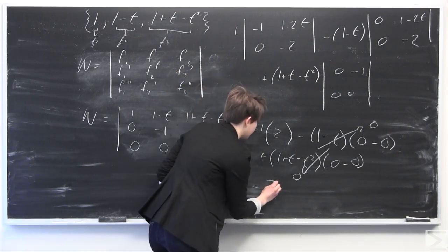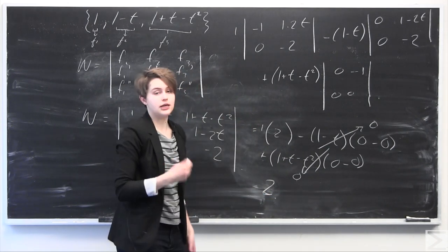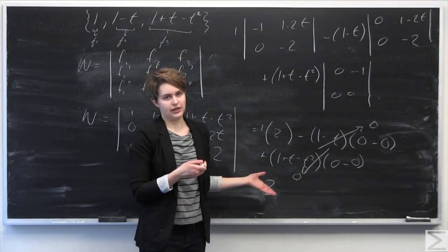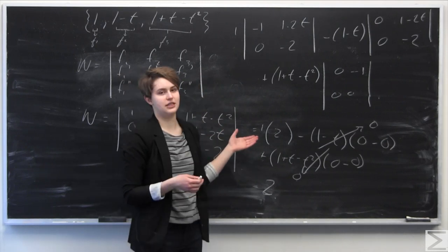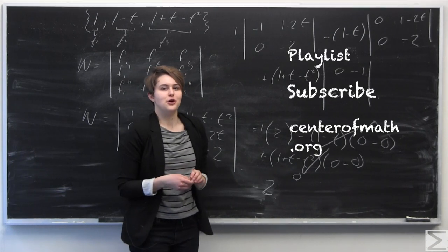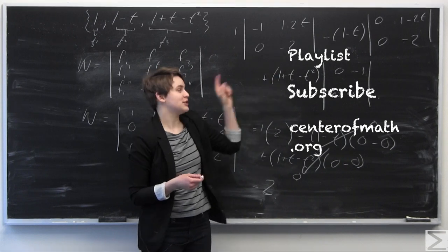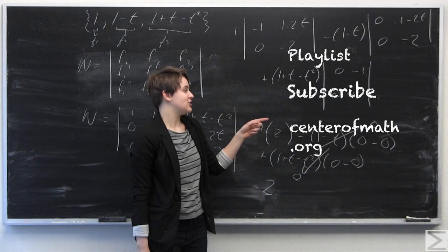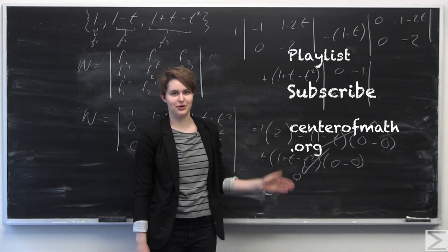Therefore, the Wronskian is not equal to 0. We know that when the Wronskian is not equal to 0, the functions are linearly independent. So using the Wronskian method, we have proved that this set of three functions is linearly independent. For more Problem of the Week videos, click on our playlist. To subscribe to our YouTube channel, click here. For more math content and to learn about our affordable textbooks, visit us at centerofmath.org. Thank you for watching.